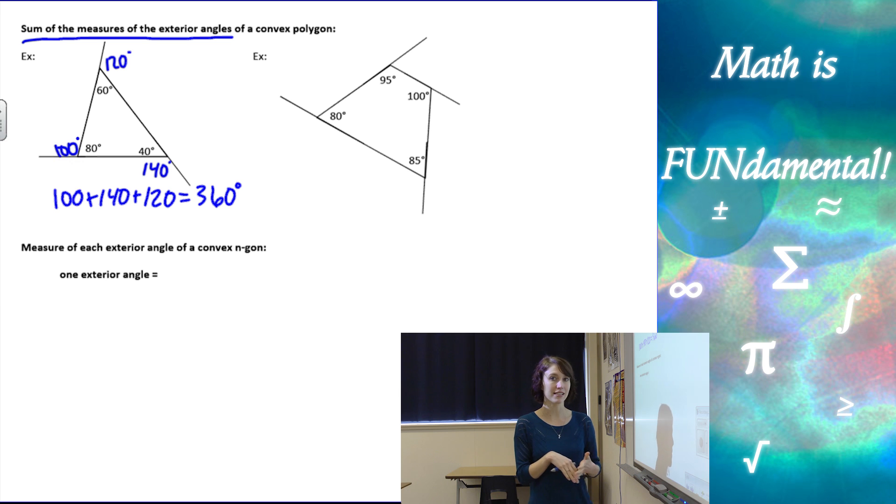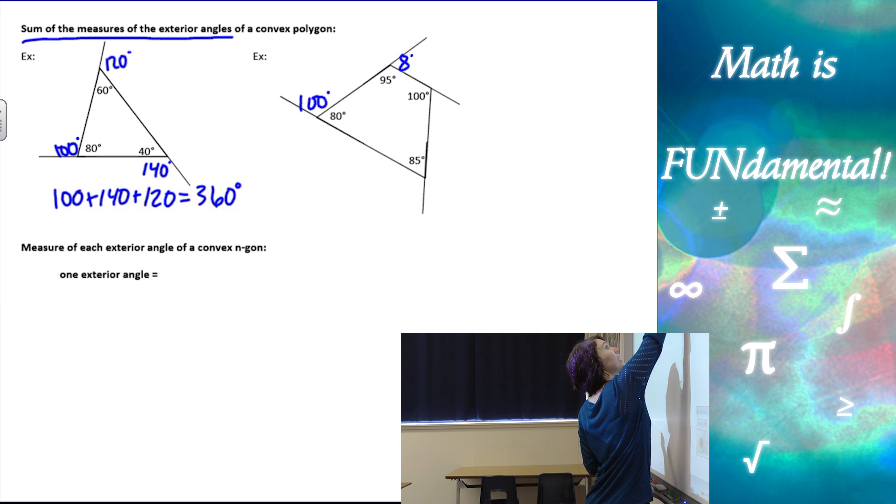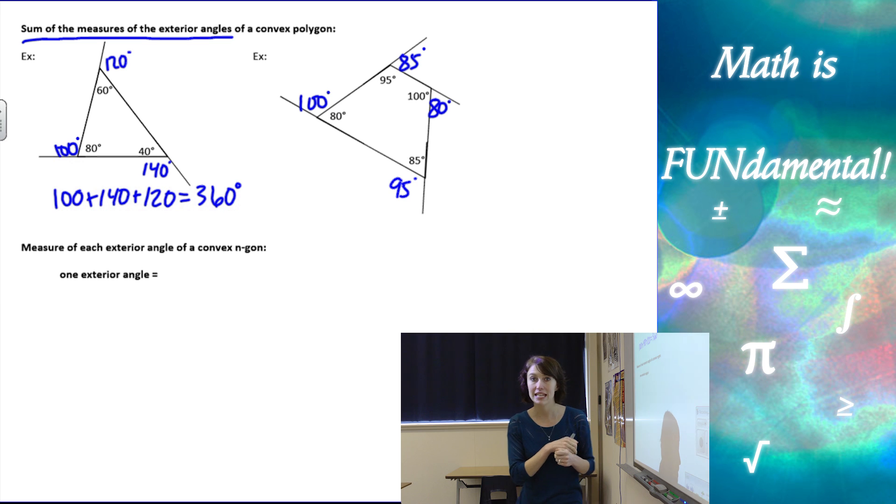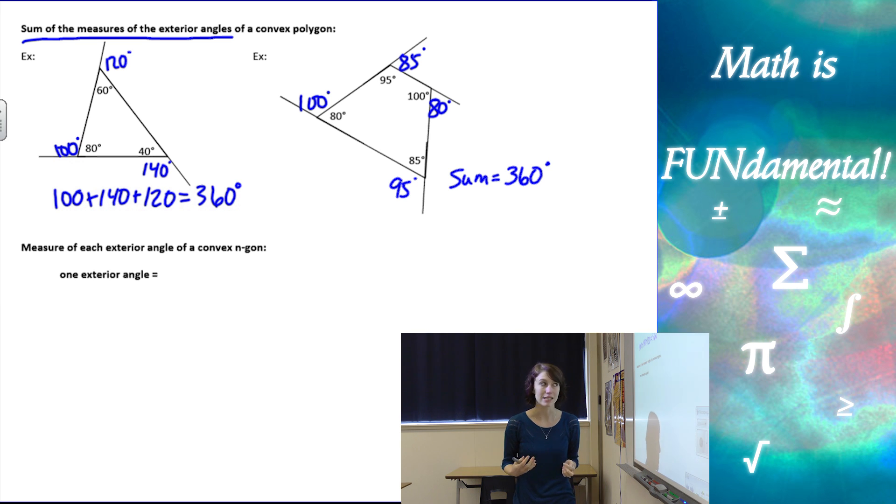Let's look at the next example and see what happens. For a triangle, we had 360 degrees, but let's see about a quadrilateral. We have 100 degrees here, 85 here, 80 here, and 95 to make 180 at each angle. If I add them all up, my sum, again, is going to be 360 degrees.